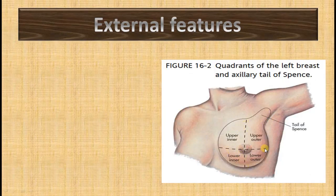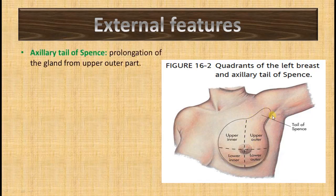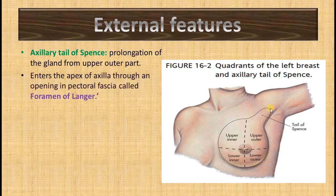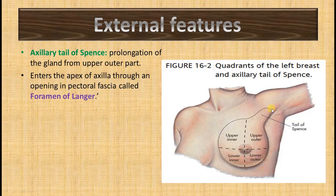If you divide the gland into four quadrants — upper outer, upper inner, lower inner, and lower outer — from the upper outer quadrant there may be a prolongation of the gland called the axillary tail of Spence. It is a prolongation of glandular material from the upper outer quadrant that enters the axilla through a foramen in the pectoral fascia called the foramen of Langer. Sometimes if this gland is enlarged in fibroadenoma, it might be mistaken for a lipoma.